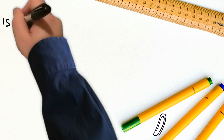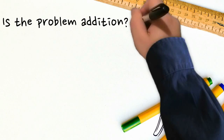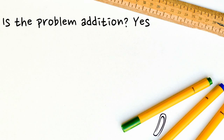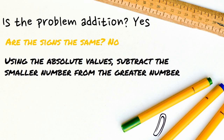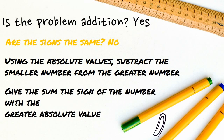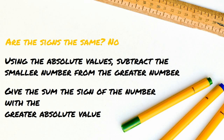If the problem is addition but the signs are different, then using the absolute values, subtract the smaller number from the greater number. Give the answer the sign of the number with the greatest absolute value.